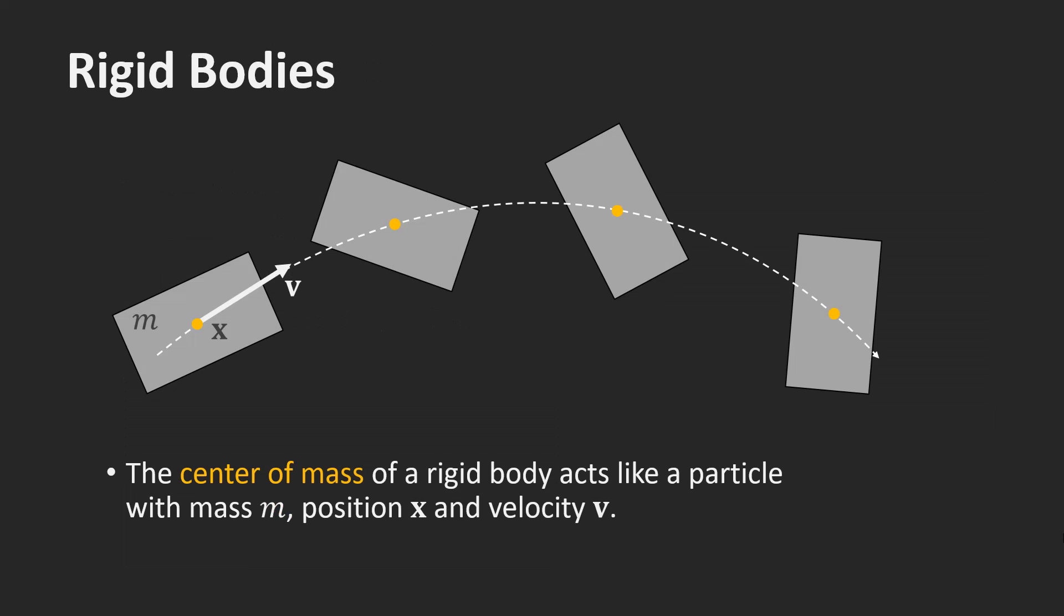Transitioning from particle simulation to rigid body simulation is relatively straightforward. A key advantage is that the rigid body center of mass behaves exactly like a particle with position x, velocity v and mass m. This similarity allows us to reuse the same code we developed for particles.